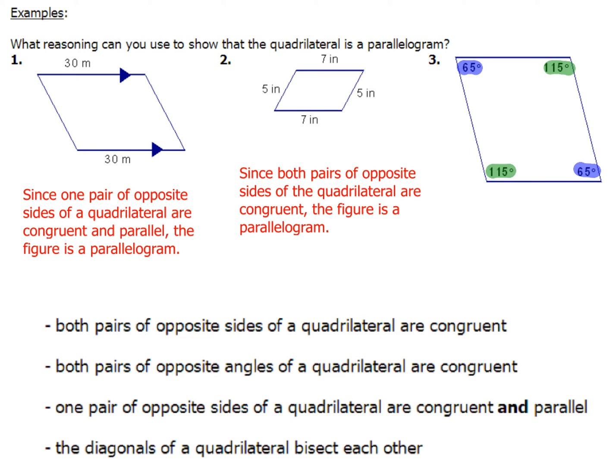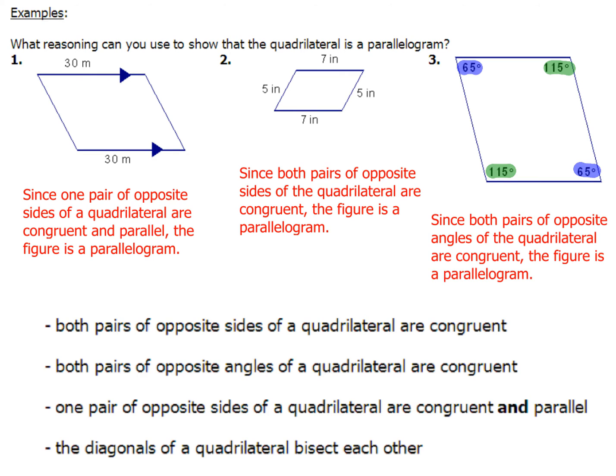You've got some mad skills with parallelograms and observational techniques. Your sentence will be: since both pairs of opposite angles of the quadrilateral are congruent, the figure is a parallelogram. Thank you very much for playing.